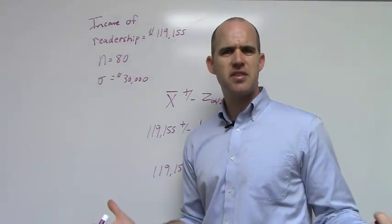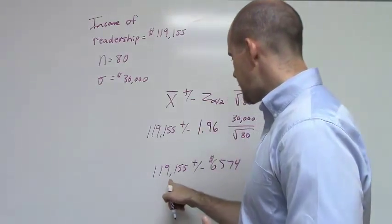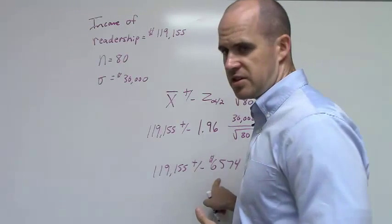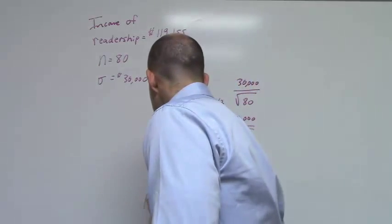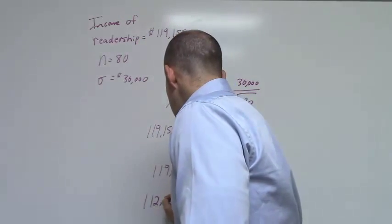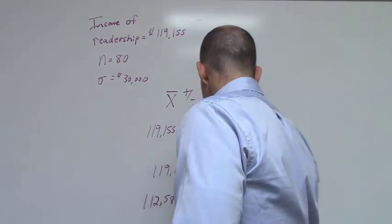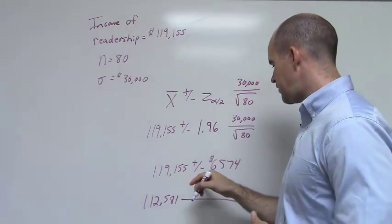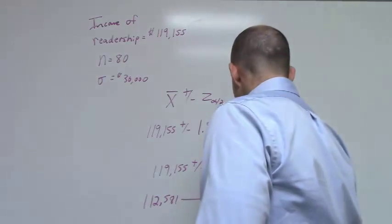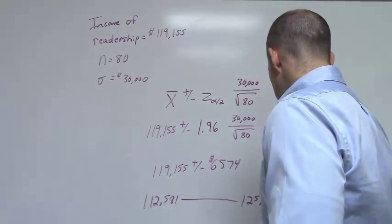Now what does this even mean? How should we think about this? Well, if you take $119,155 minus $6,574 that is $112,581. And if you take $119,155 plus $6,574 that is $125,729.